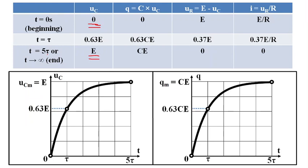What does tau represent? T equals tau is the instant when UC attains 63% of its maximum value. UC equals 0.63E. Tau is called the time constant of this RC circuit. Tau is the time needed for the capacitor to reach 63% of its maximum voltage or charge.